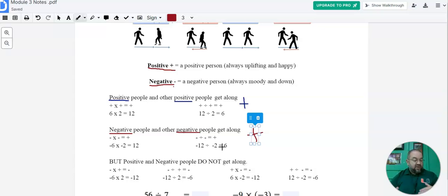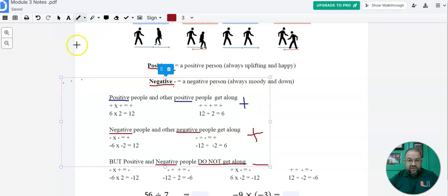However, anytime that you have a negative and a positive number being multiplied or divided, they want to be negative. So you can think of it as negative people don't always get along. So we're going to get negative numbers.